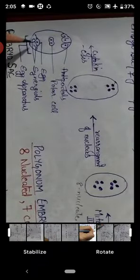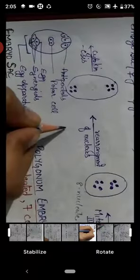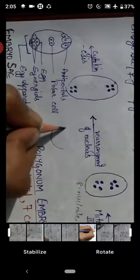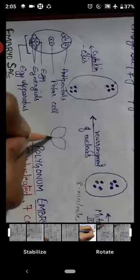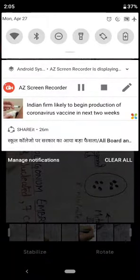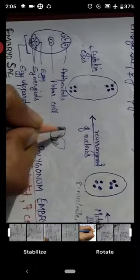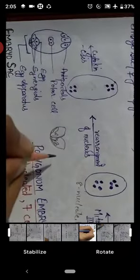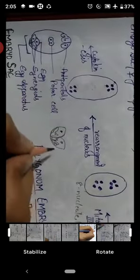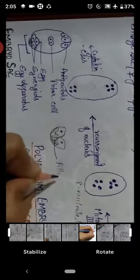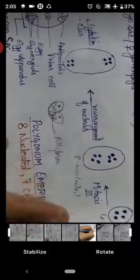Two synergid cells are present in the egg apparatus. In the synergids, there are finger-like projections present at the tip region. These finger-like projections are called the filiform apparatus.